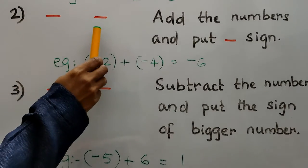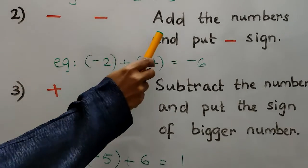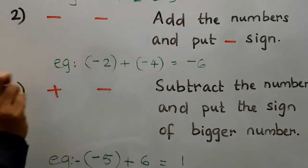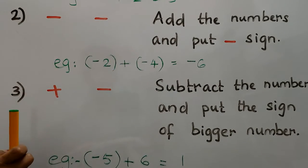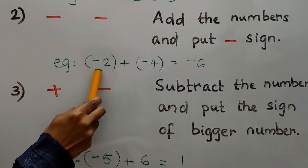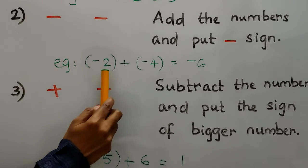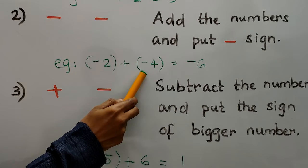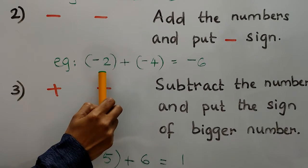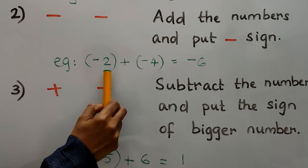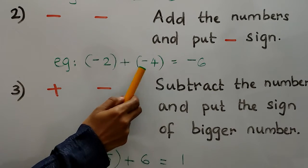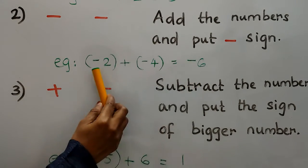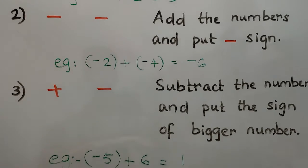If two numbers are negative, then add the numbers and put the negative sign. Here we are taking the numbers only. For example, negative 2 plus negative 4 — negative 2 and negative 4 are negative numbers. We are taking the numbers without sign, that means 2 and 4. Add it: 2 plus 4 is 6. Both are negative, so answer is negative.